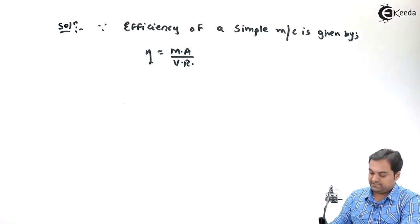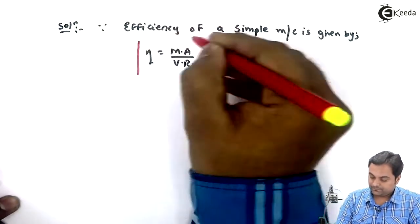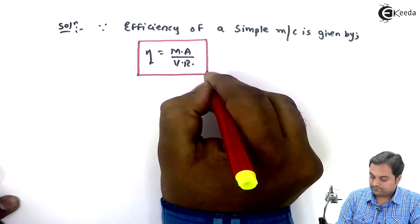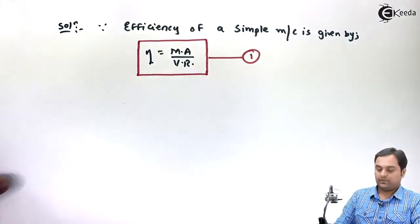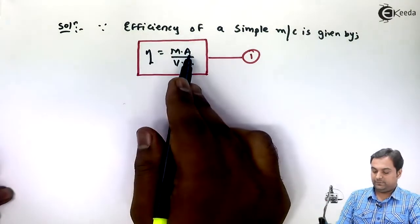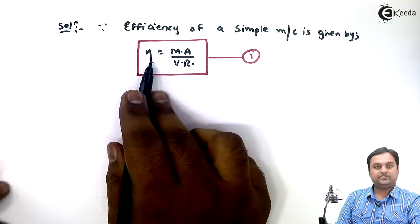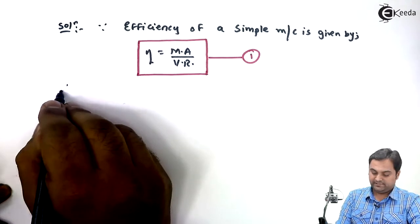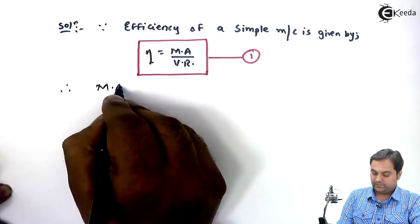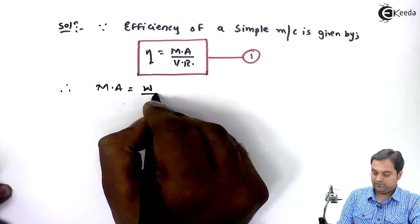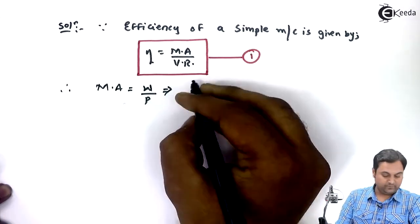I'll keep this as equation number one. Now I will get mechanical advantage. Velocity ratio is given so efficiency can be calculated. Therefore, mechanical advantage is equal to load upon effort. Load is given in the problem as 900, effort is 56.43.